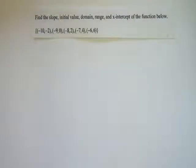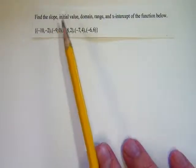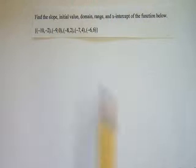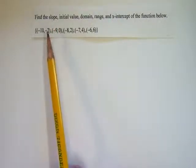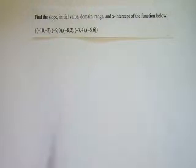Hey guys, in this tutorial we're going to be looking at finding the slope if you're given a set of ordered pairs much like this one. Now the directions here ask us to find the slope, initial value, domain, range, and so on. We're going to, in this video, focus on only finding the slope when you have a set of ordered pairs.